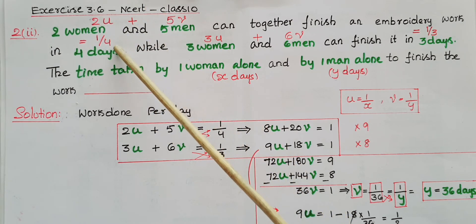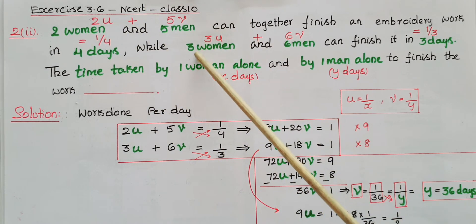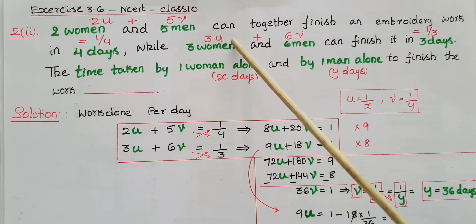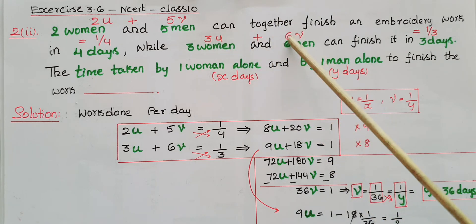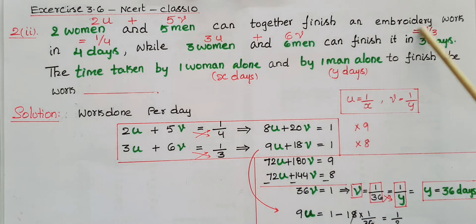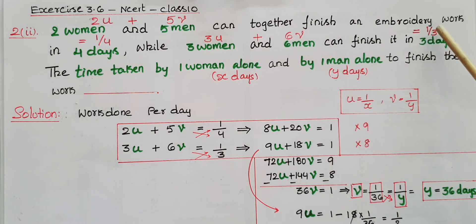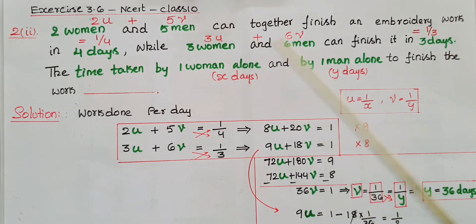Similarly, three women and six men finish in three days, so the work done per day is one-third. The second equation is: 3u plus 6v equals one-by-three.